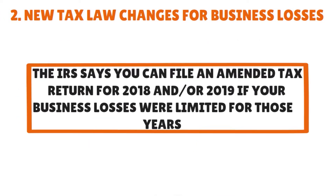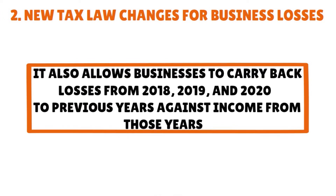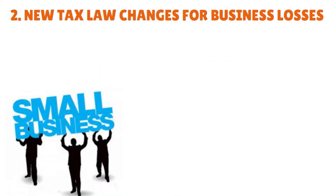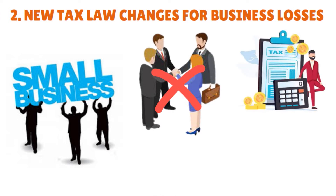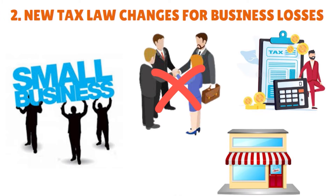The IRS says you can file an amended tax return for 2018 and/or 2019 if your business losses were limited for those years. It also allows businesses to carry back losses from 2018, 2019, and 2020 to previous years against income from those years. Another important element of the CARES Act is that your small business — not corporations — may use net operating losses to offset your personal income with no limits. The authorities are trying to help the small business community through the CARES Act by making it easier to apply losses to past or future income statements.